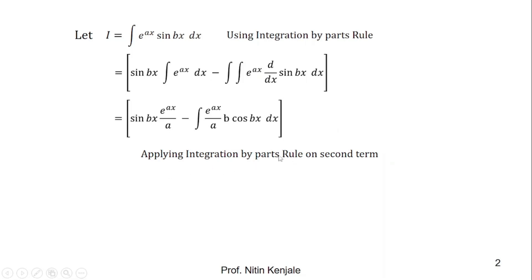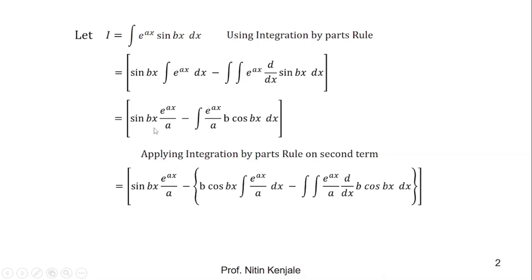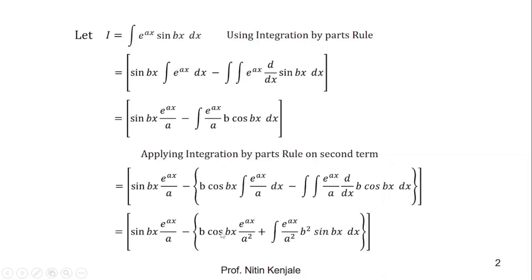By applying this integration by parts rule to the second term and keeping the first term as it is, we have sin(bx)·e raised to ax upon a, minus b (which is a constant). Similarly, a is a constant. Considering cos(bx) as u and e raised to ax as v, we have b·cos(bx) into the integration of e raised to ax upon a dx, minus the integration of e raised to ax upon a times the derivative of b·cos(bx) dx. Simplifying: we get b·cos(bx)·e raised to ax upon a squared, minus the integration of e raised to ax upon a squared times the derivative, which is b squared·sin(bx) — the two negatives become a plus.